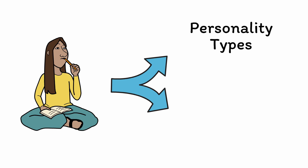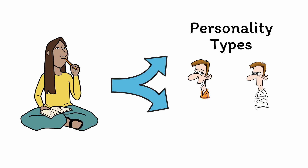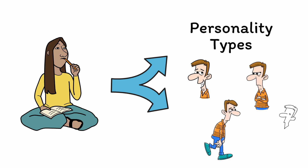For example, you may have heard of the four humors, including sanguine for social, extroverted, and fun-loving people; choleric for hot-tempered, decisive, and strong-willed people; melancholic for artistic, introverted, and private people; and phlegmatic for calm, easygoing, and conflict-avoidant people.